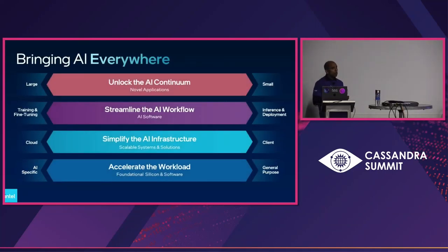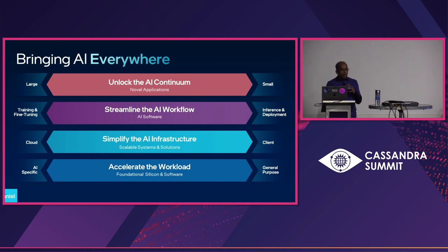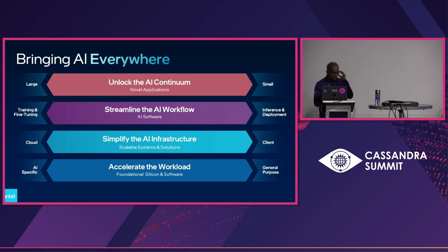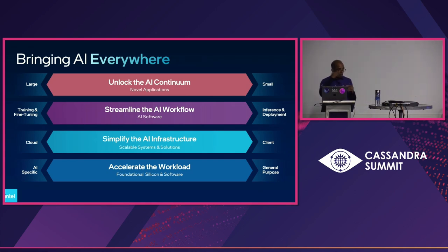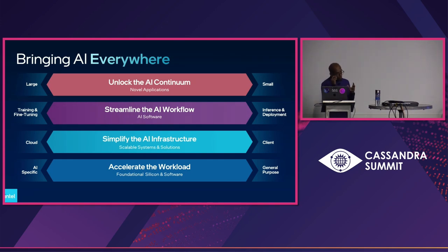Let's switch gears and talk about what we mean by bringing AI everywhere. It's important that we help developers realize the full benefit of AI, and the only way to do that is to bring AI everywhere, to everyone, on all devices, and for all use cases. No matter whether you're running it on a client, desktop, cloud, or edge, and no matter what your use case is — training, fine-tuning, running a RAG pipeline — we want to support that. We want to do so in a very secure, transparent, ethical, and responsible manner.